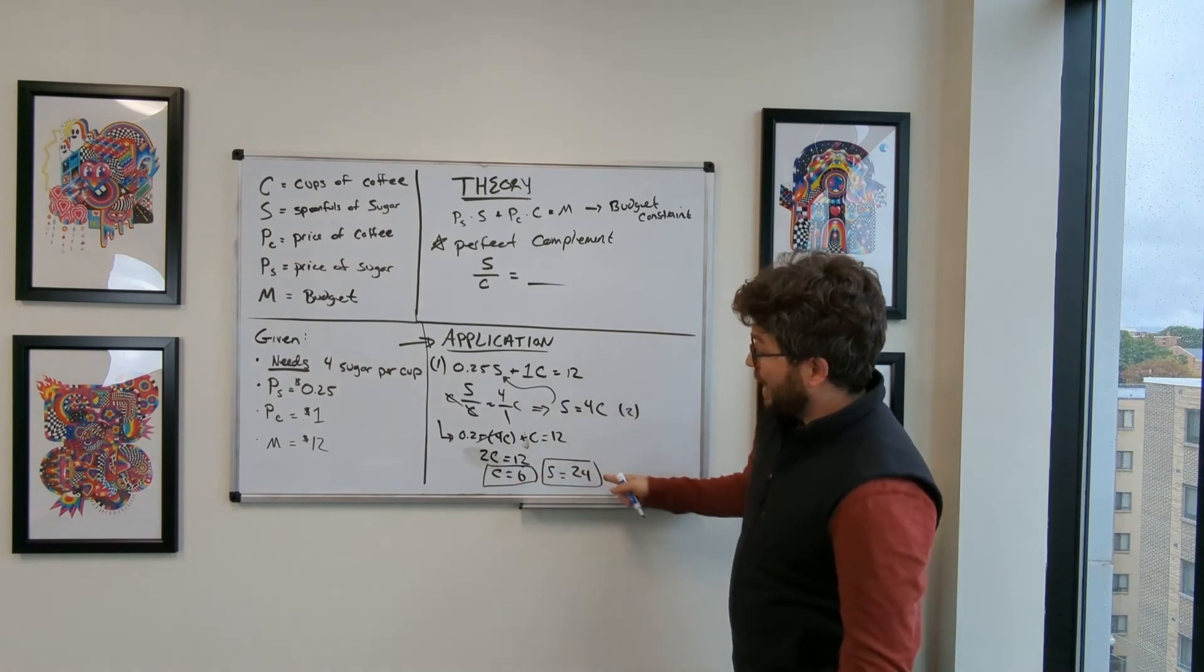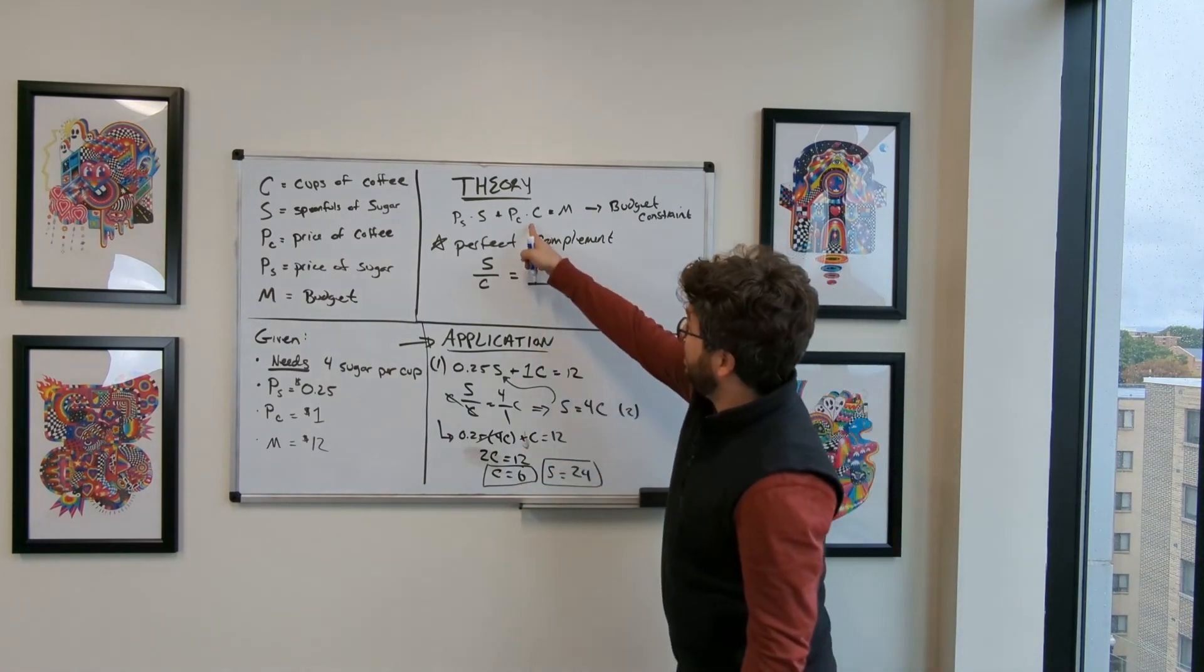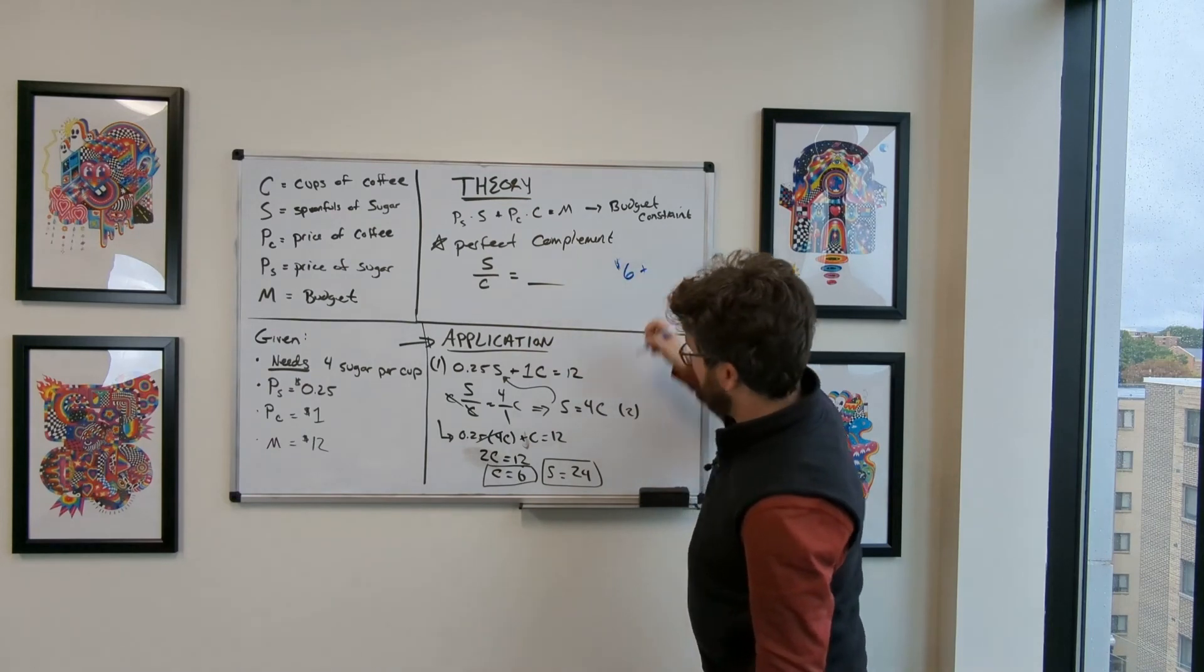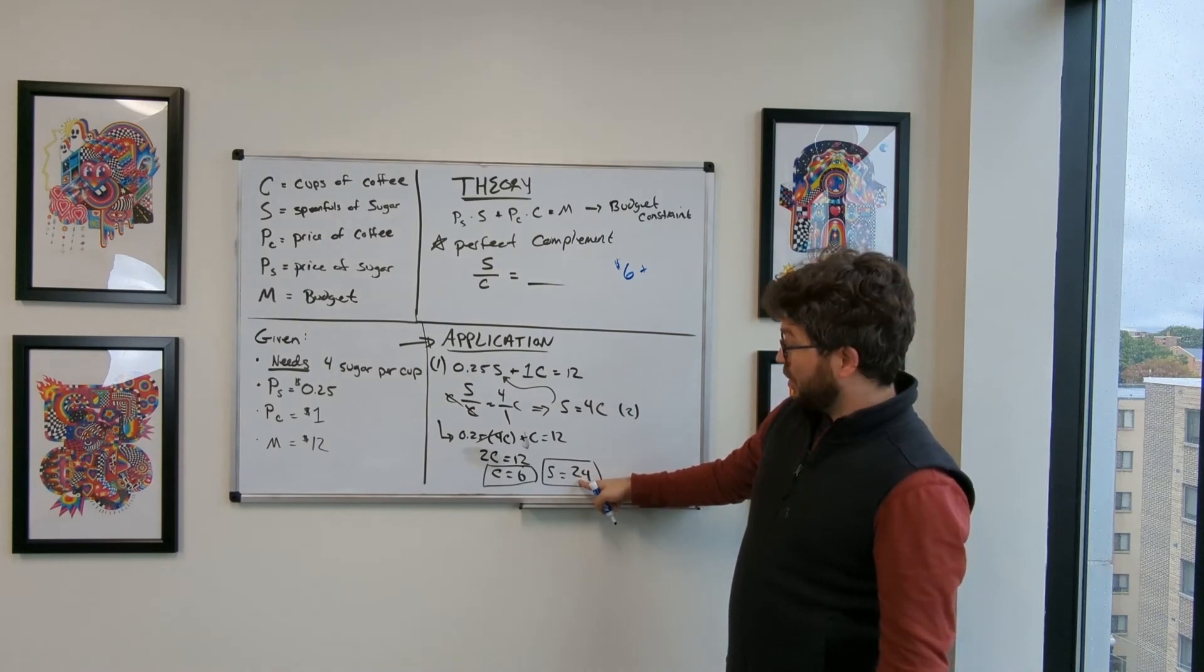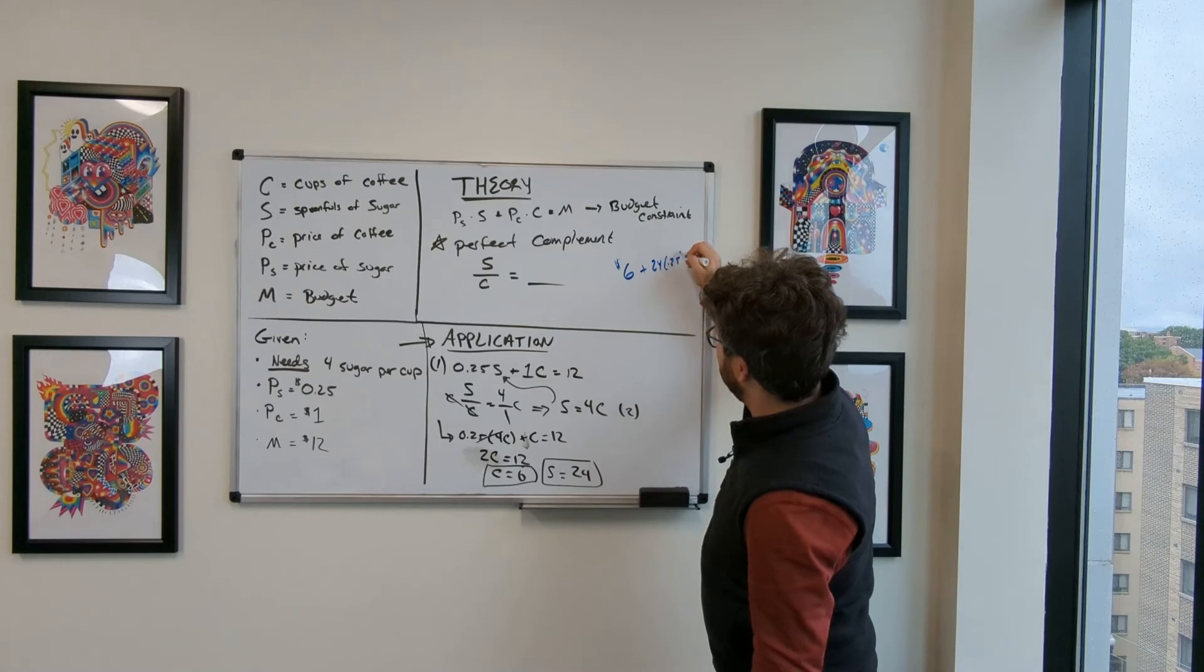Let's go ahead and double check this with our theory. Six cups of coffee is going to be $6. 24 spoonfuls of sugar is going to be 24 times 25 cents.